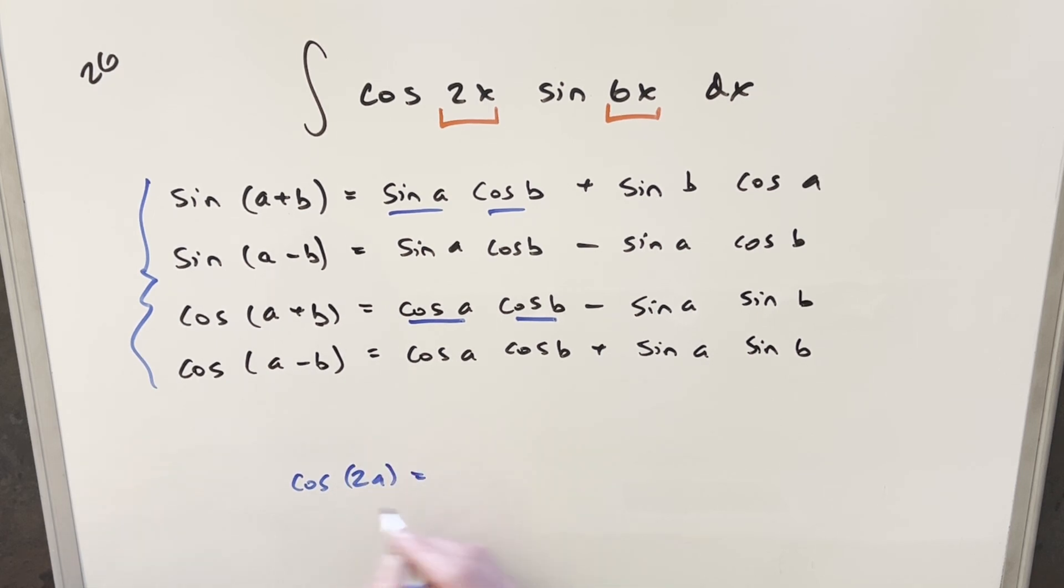The way I remember this is if you think about cosine 2a, and we break that up, we write it as cosine a plus a, then using this formula, you end up with cosine squared a minus sine squared a. But this here, this is exactly our double angle formula for cosines. This is just kind of how I keep it straight in my mind.